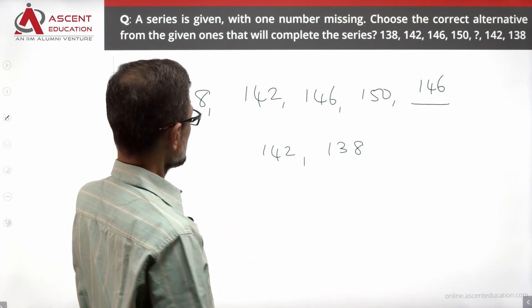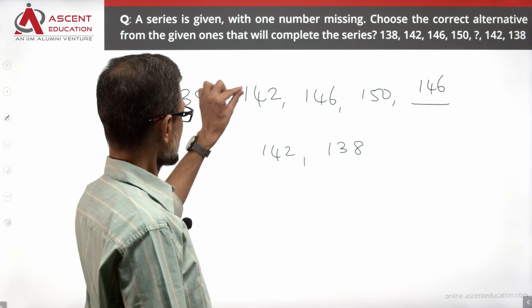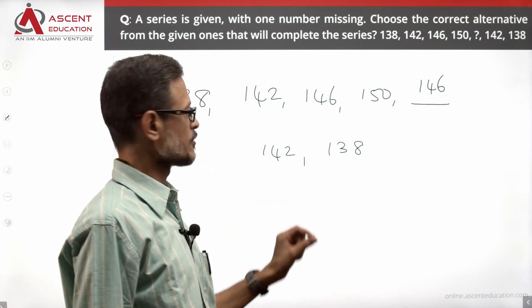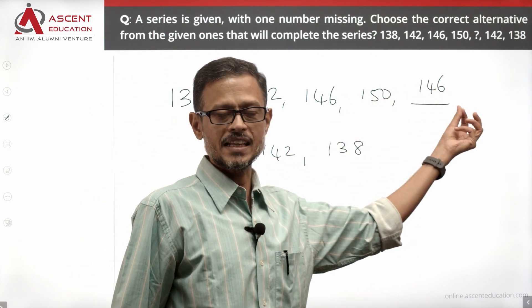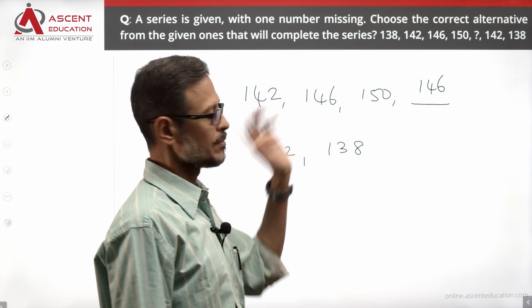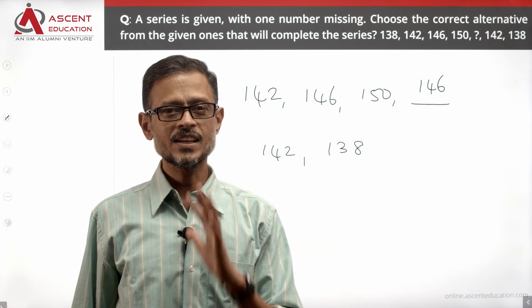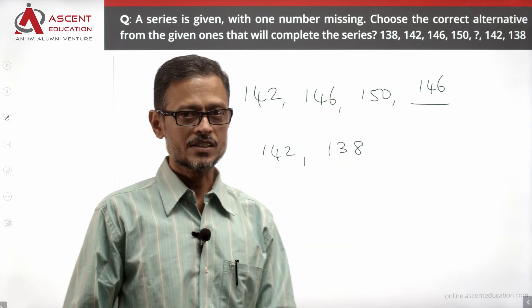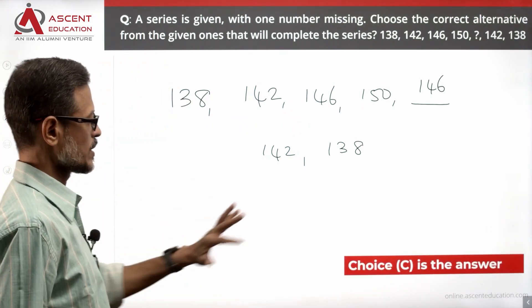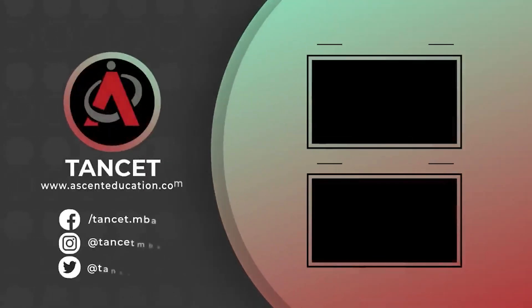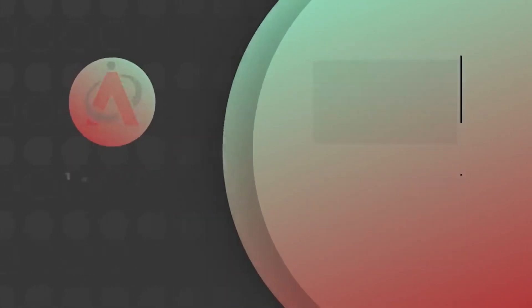Another way of looking at it: the first number and last number are 138. The second number and second-to-last number are 142. The third number and third-to-last number are 146. The middle number is 150. So 146 is the missing number. Choice C is the correct answer.